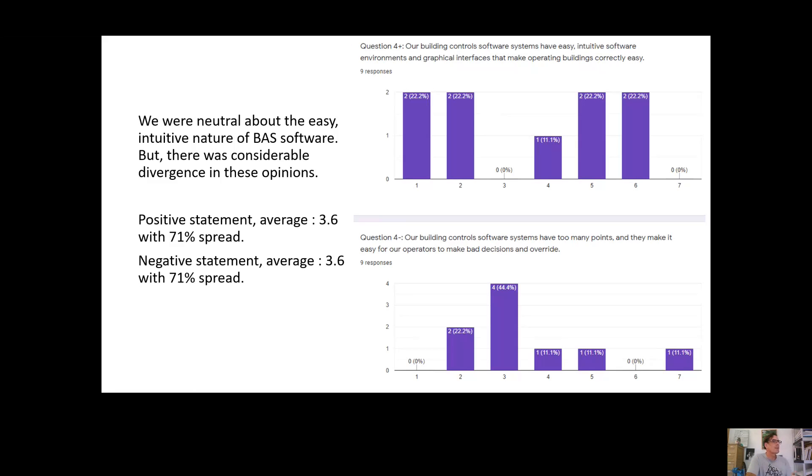Question number four, our building control softwares have easy and intuitive software that make operating buildings correctly easily. And the negative one, because the negative one was slightly differently worded, our building control software have too many points and they make it easy for our operators to make bad decisions and overrides. We were neutral on this. 3.6 in both cases with a 71% spread.